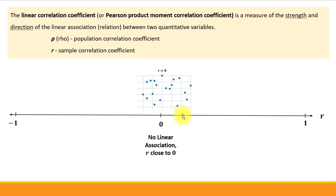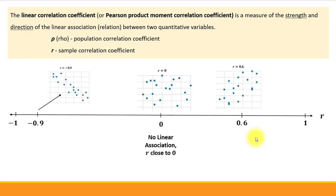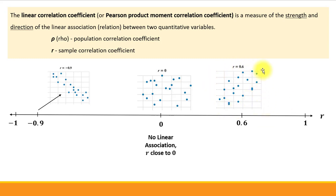But as the correlation coefficient moves further away from zero, the association becomes stronger and stronger. Compare two linear associations with correlation coefficients 0.6 and negative 0.9 — which one is further from zero? The one with negative 0.9. As you can see, points on the scatter plot come closer to an imaginary straight line compared to the association with 0.6, where points are more scattered.